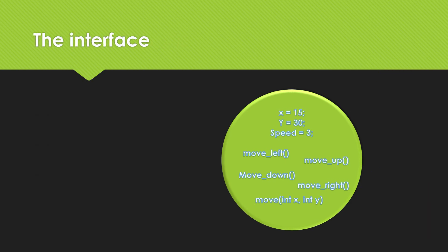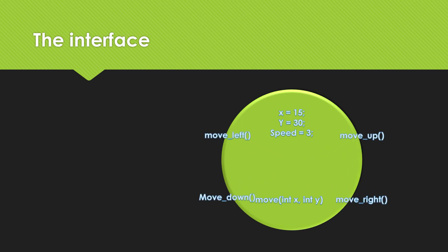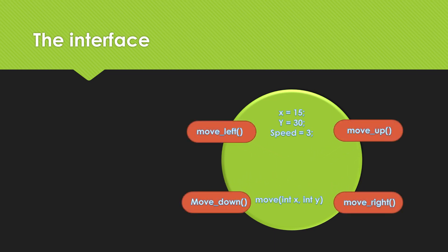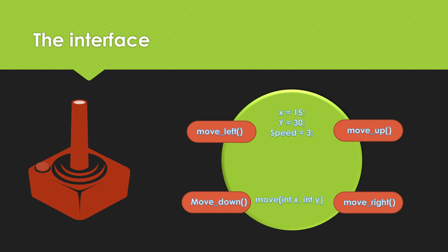By manipulating what code is visible outside of your object, you can create a fourth component: an interface. The interface of an object is often composed of a set of methods or scripts that can be called to manipulate the object's state. This allows other objects to interact with and change the state of another object. For example, you may have a player object with a set of methods to move it in all four directions, which could be called by a user input object.